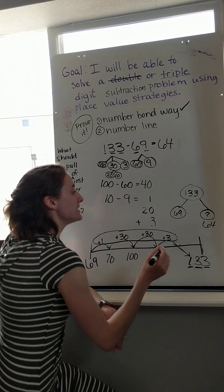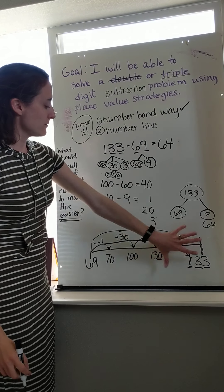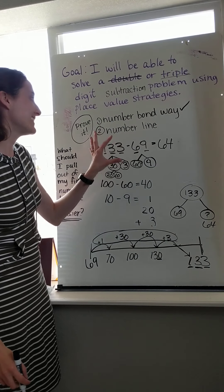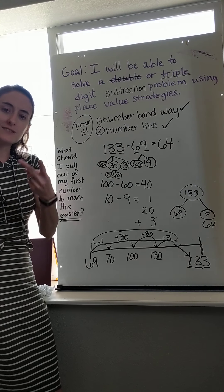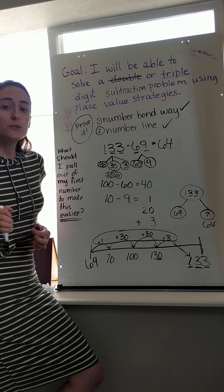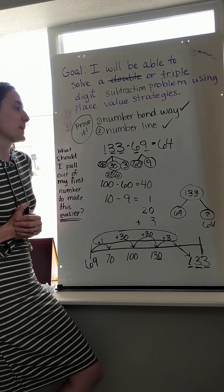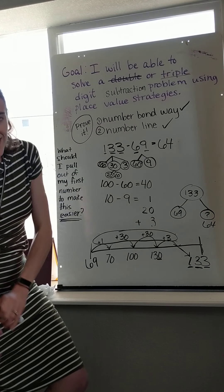So again, I did find 64 with my number line strategy and my number bond way. I proved it to myself by using two strategies. Let's see if you can do the same today. We're super excited to see your work. Thank you scholars. Cheers!